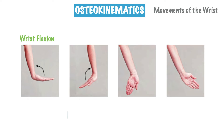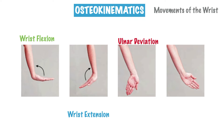Directly next to this image is wrist extension. Place your hand out directly in front of you with your palm facing downward, then lift up at the wrist so that your fingers are pointing towards the ceiling — that's wrist extension. In the third image we have ulnar deviation. Place your palm out in front of you facing upwards, then bend your wrist to the side so that it moves in the direction of your pinky finger, towards the side of your arm where the ulna bone is located.